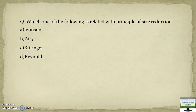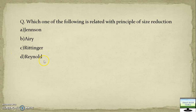See this question: 'Which one of the following is related with the principle of size reduction?' Option A is Jensen — Jensen is related to storage in deep bins. Iris is related to storage in shallow bins. Reynolds number we have heard in fluid engineering, so that is also not related. Your answer will be Rittinger. And what are the two other laws? Kick and Bond. Remember this — it is the first type of question that appears in exams.